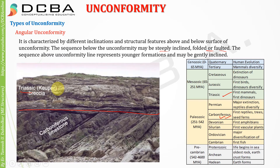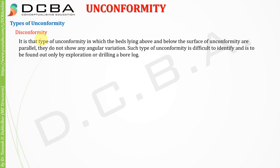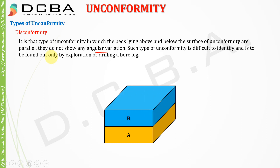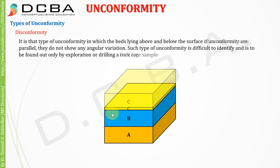The next type is disconformity. It is that type of unconformity in which the beds lying above and below the surface of unconformity are parallel — they do not show any angular variation. Such unconformity is difficult to identify and can only be found by exploration or drilling a bore log. Unlike angular unconformity, there is no clear visual demarcation.